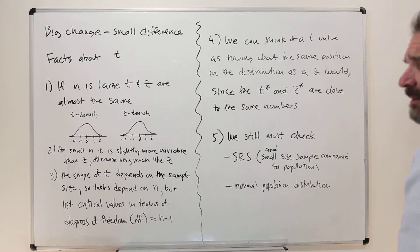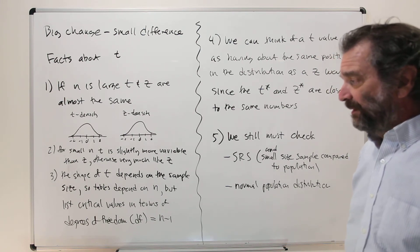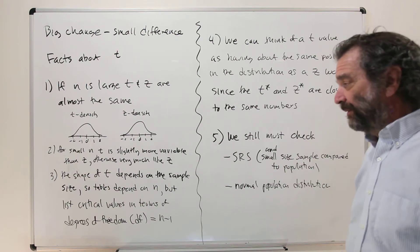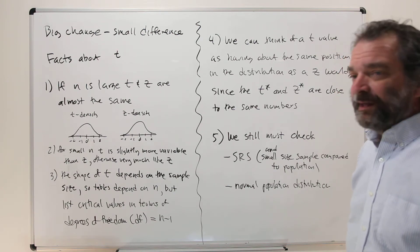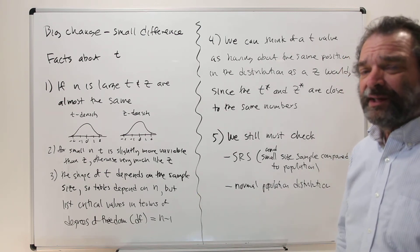For number 2, for small n, t is slightly more variable than z, otherwise very much like z. The shape of t depends on the sample size. So tables depend on the sample size n. But they list the critical values in terms of something else. Well, it's the same thing, but different. In terms of the degrees of freedom, which they usually write as df, which is one less than the sample size.